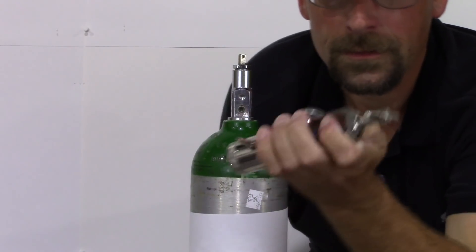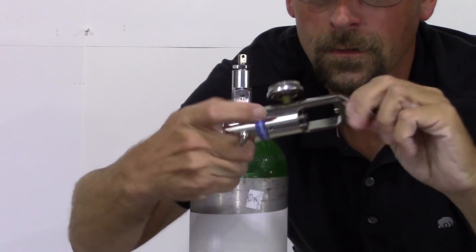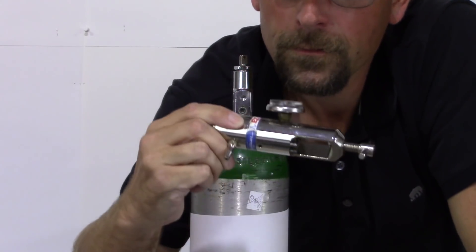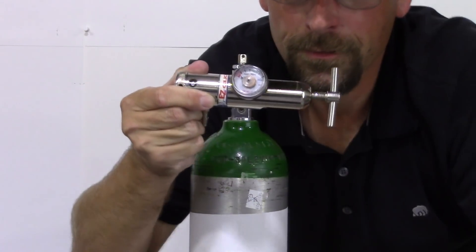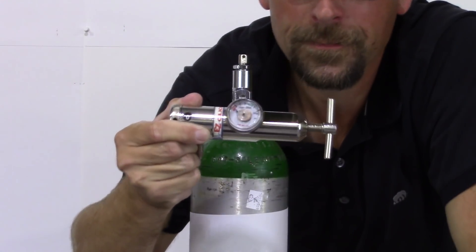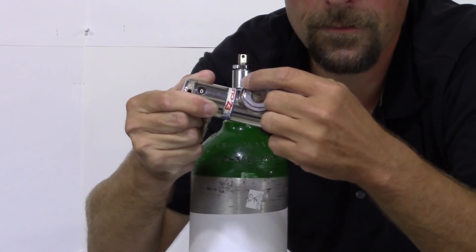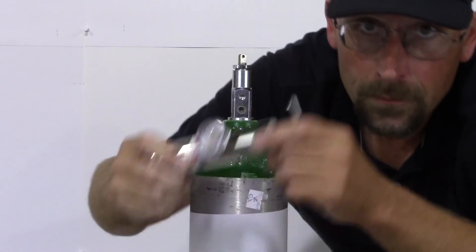Here's our standard regulator. Gauge on here goes from empty to full. Your tanks are pressured at about 2,000 PSI. You'll see it goes from the green into the red when it's empty.